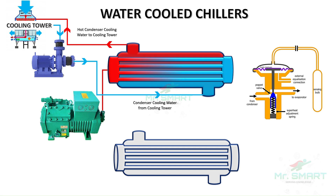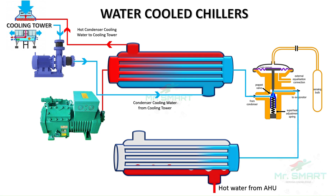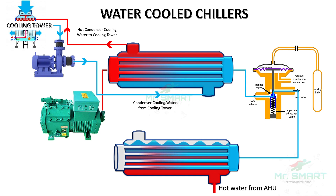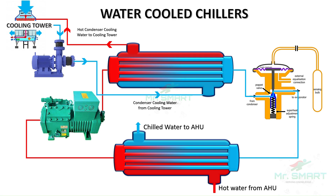The high-pressure liquid after condensation is passed through the expansion valve, which reduces the pressure and temperature of the refrigerant before it enters the evaporator. In the evaporator, the refrigerant absorbs heat from the chilled water released from the AHU, evaporating into a low-pressure refrigerant. This low-pressure refrigerant is then compressed again, and the cycle repeats.